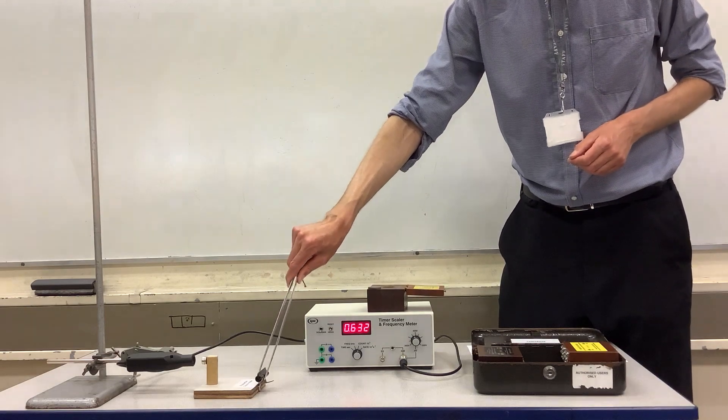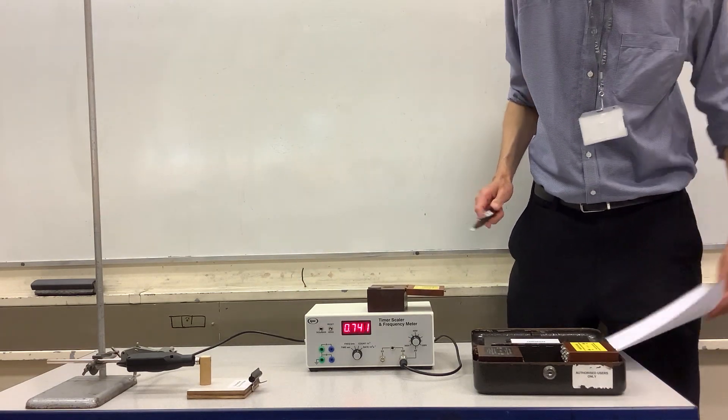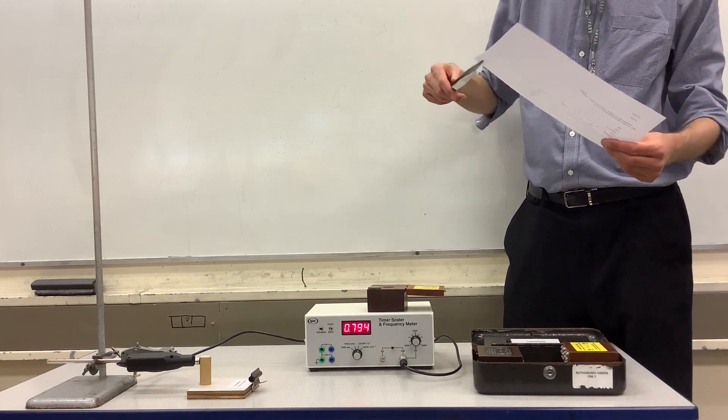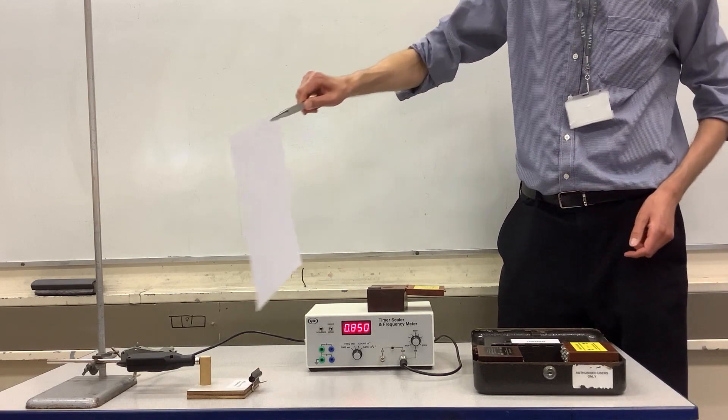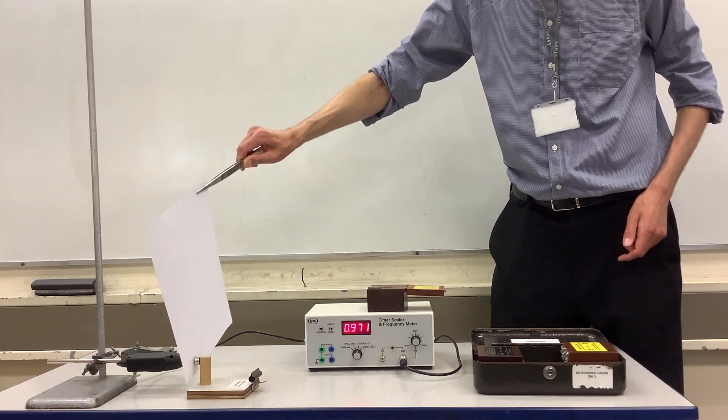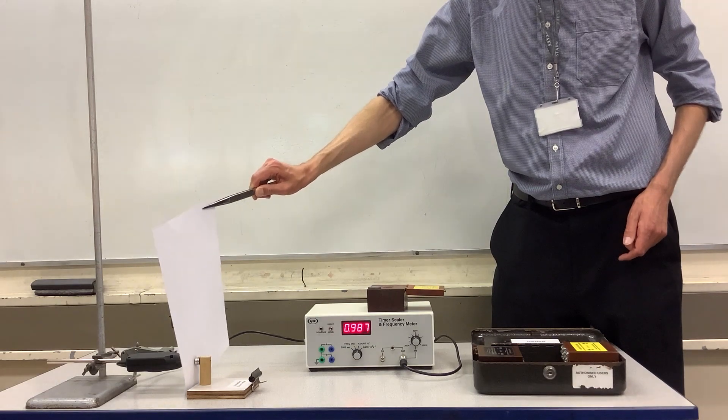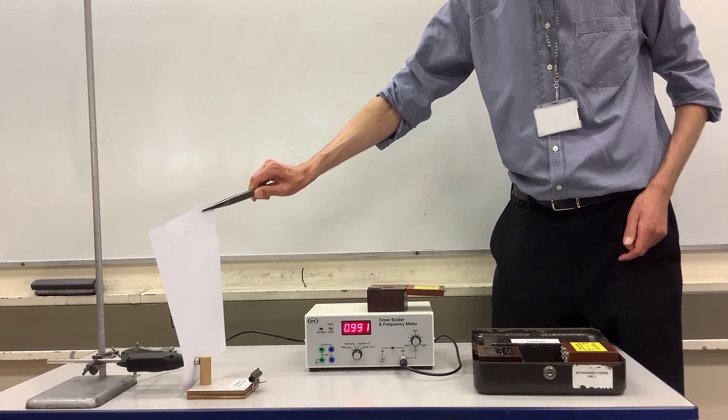The other thing that we can look at is what I would need to put in between in order to block it. If I put a single piece of paper in between the source of alpha radiation and the detector, that thin piece of paper absorbs virtually all the alpha radiation.